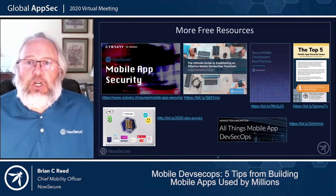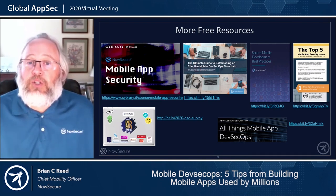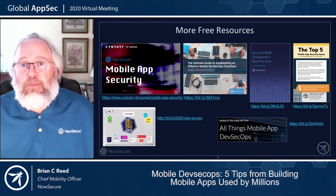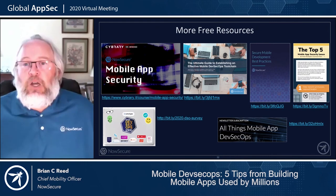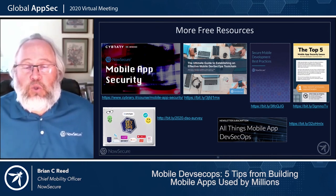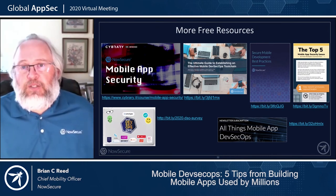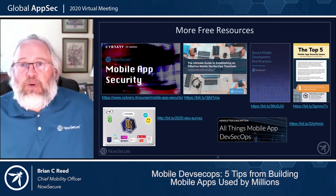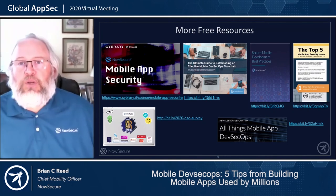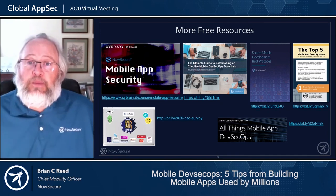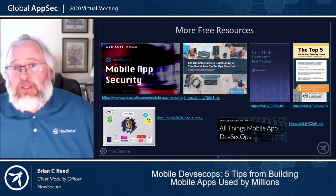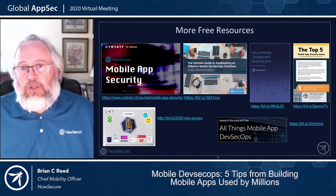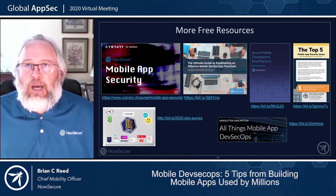Before we wrap up, here are a lot of resources — you'll have all these links. There's a great Cybrary intro class; if you don't know a lot about mobile AppSec, 30 minutes will give you a good baseline. There are resources on how to set up the tool chain — tool choices, feature capabilities, and how to integrate it all together — plus some development best practices. There's a great infographic walking through the top five most frequent vulnerabilities to help you and your developers figure out where to focus. There's also a link to the DevOps survey, and if you're into mobile DevSecOps there's a newsletter with tips and tricks coming out every two weeks.